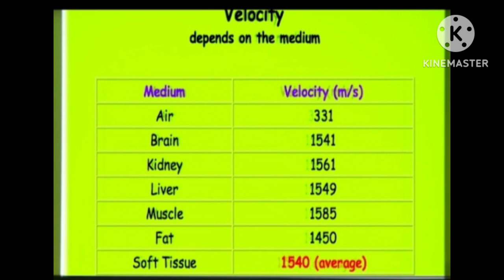For fat, the velocity is 1450 meters per second, and for soft tissue, it is 1540 meters per second. In conclusion, air is not sono-friendly — air is the enemy of ultrasound. That is why when ultrasound travels through air, the velocity is slowest at 331 meters per second.